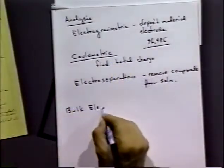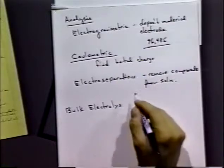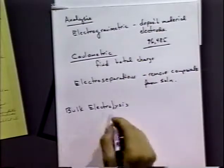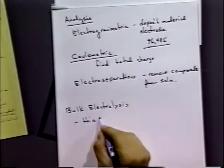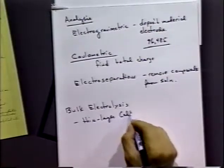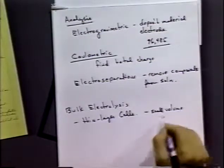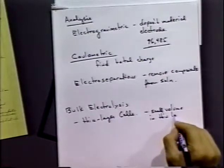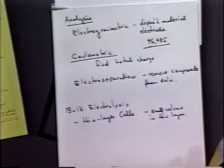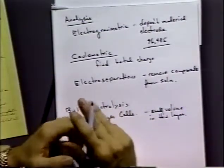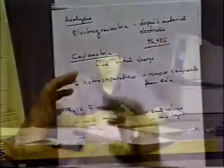In bulk electrolysis the advantage is to use small volumes and large electrode area. One thing people often use are thin layer cells — a nice small volume in a very thin layer. When you have a small amount of material, you don't have very many moles to analyze, so the reaction can occur quite quickly. Within a few seconds you can often completely electrolyze that solution and get the total charge. From that you can get, for example, the number of electrons involved, or if you know the number of electrons, you can determine the concentration.